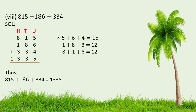Here is the eighth part of Question No. 1: 815 plus 186 plus 334. We add all these whole numbers. 5 plus 6 plus 4 is 15; write 5 here and 1 is the carry. 1 plus 8 plus 3 is 12; add the carry to get 13. Write 3 here, and 1 is a carry. 8 plus 1 plus 3 is 12; add the carry to get 13. Write 13 here. Thus, 815 plus 186 plus 334 is 1335.